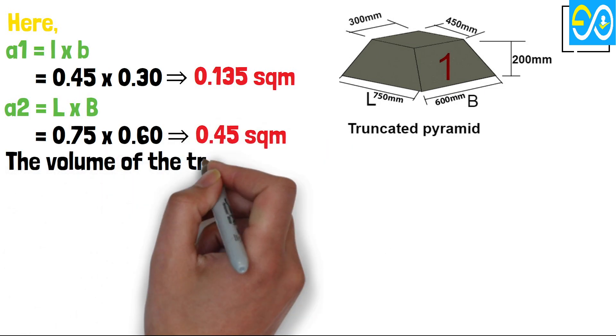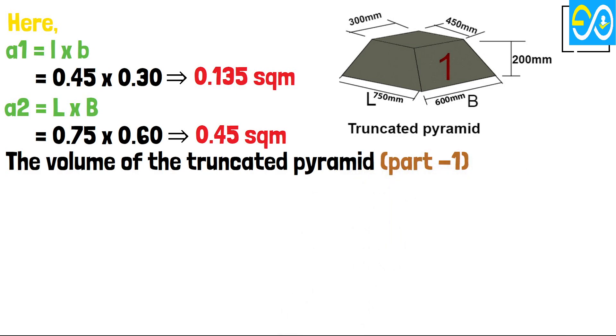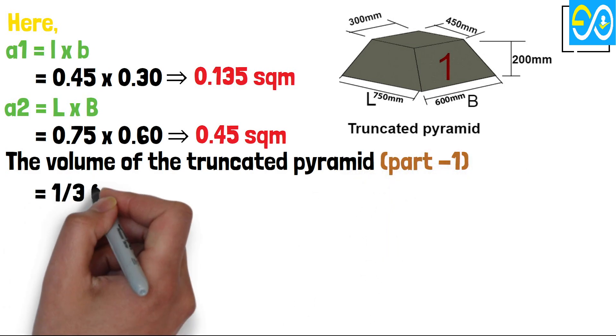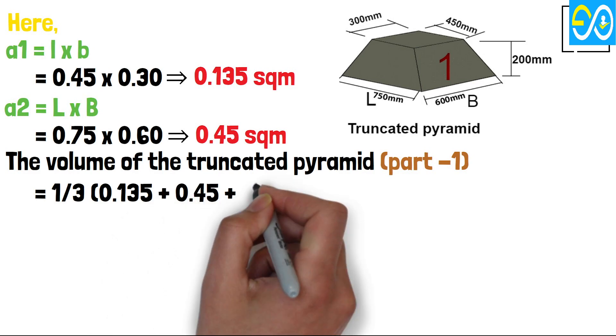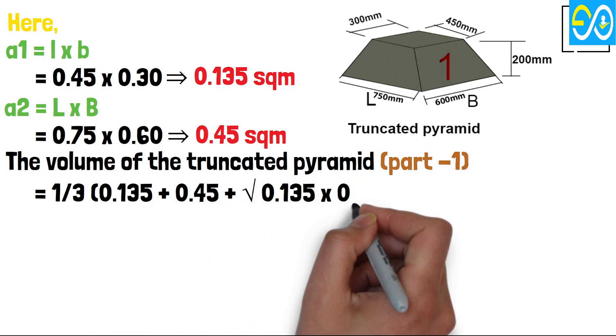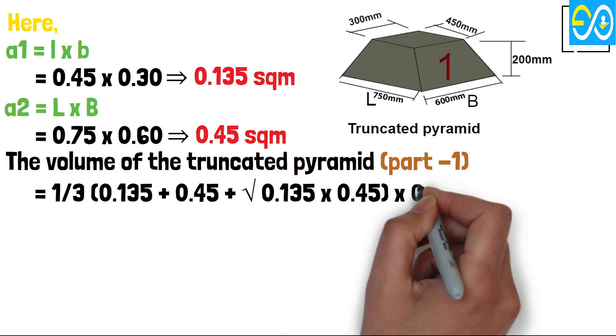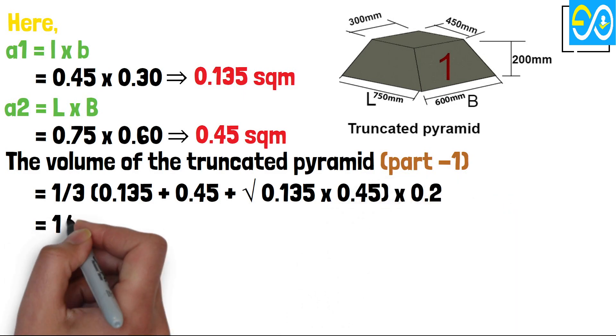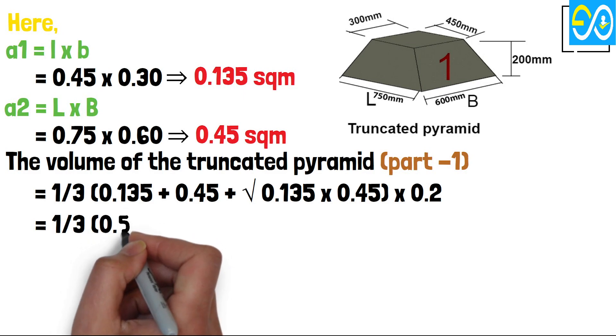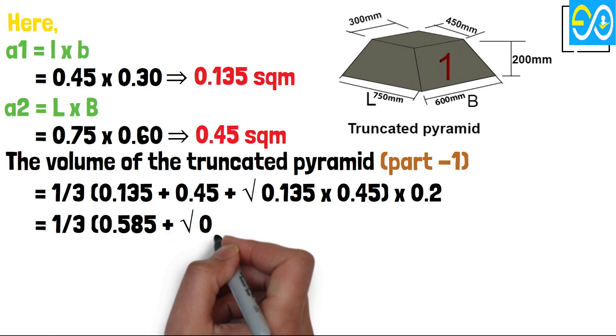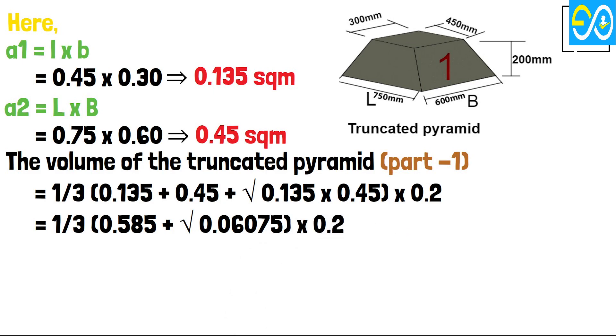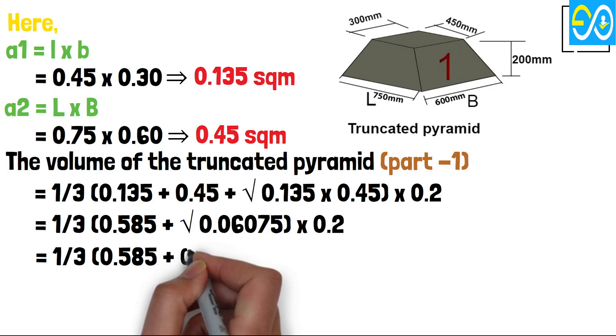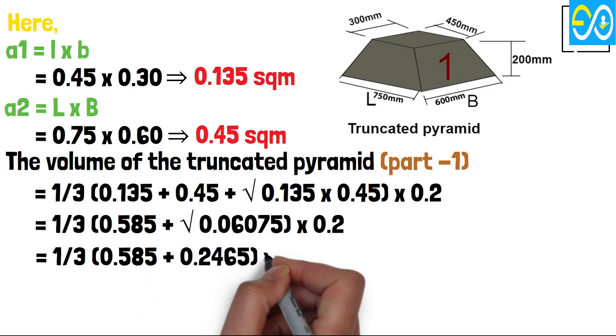The Volume of the Truncated Pyramid Part 1 equals 1/3 times (0.135 plus 0.45 plus square root of 0.135 times 0.45) times 0.20 equals 1/3 times (0.585 plus square root of 0.06075) times 0.2 equals 1/3 times (0.585 plus 0.2465) times 0.2.